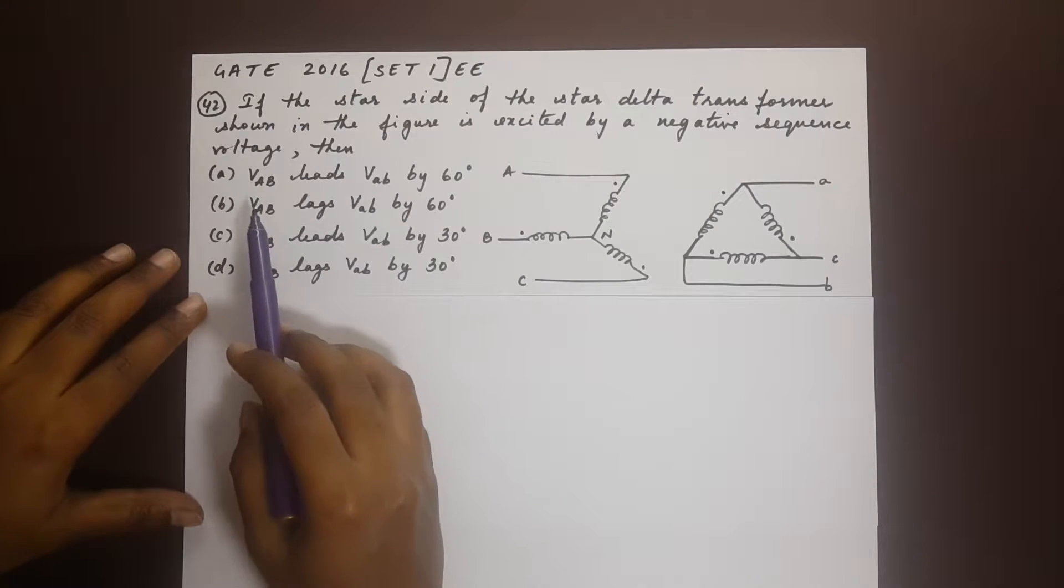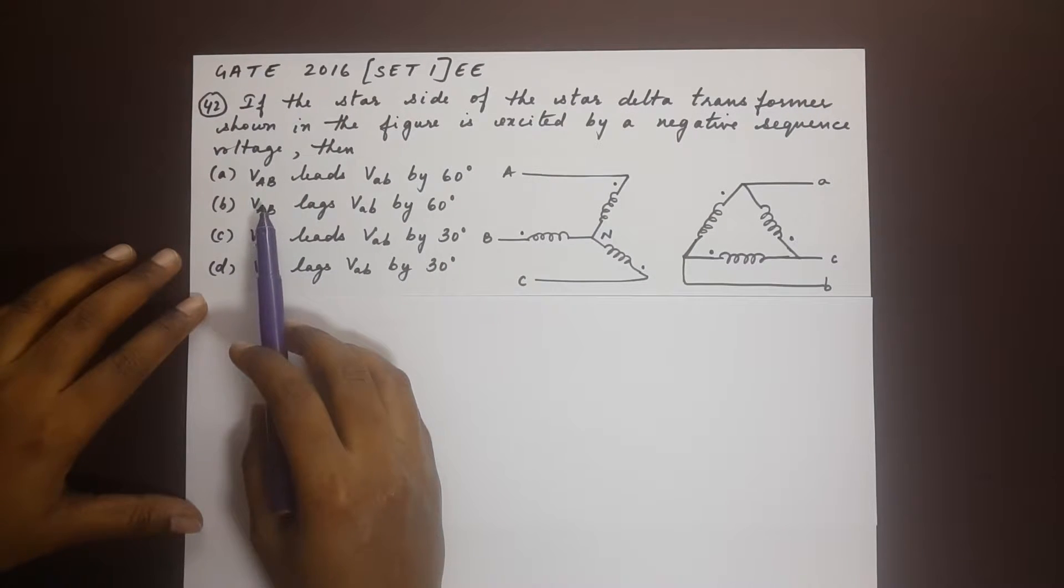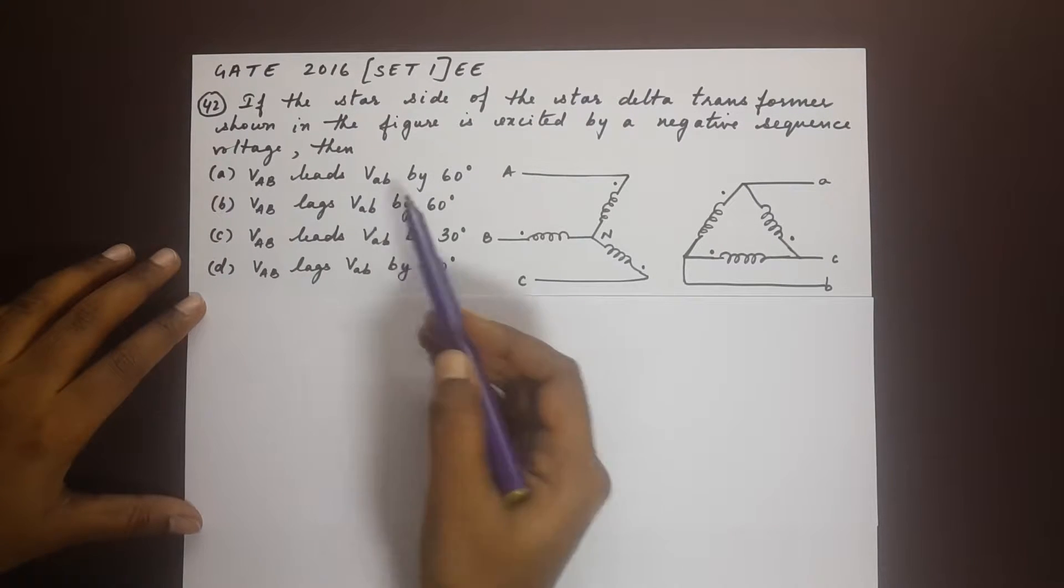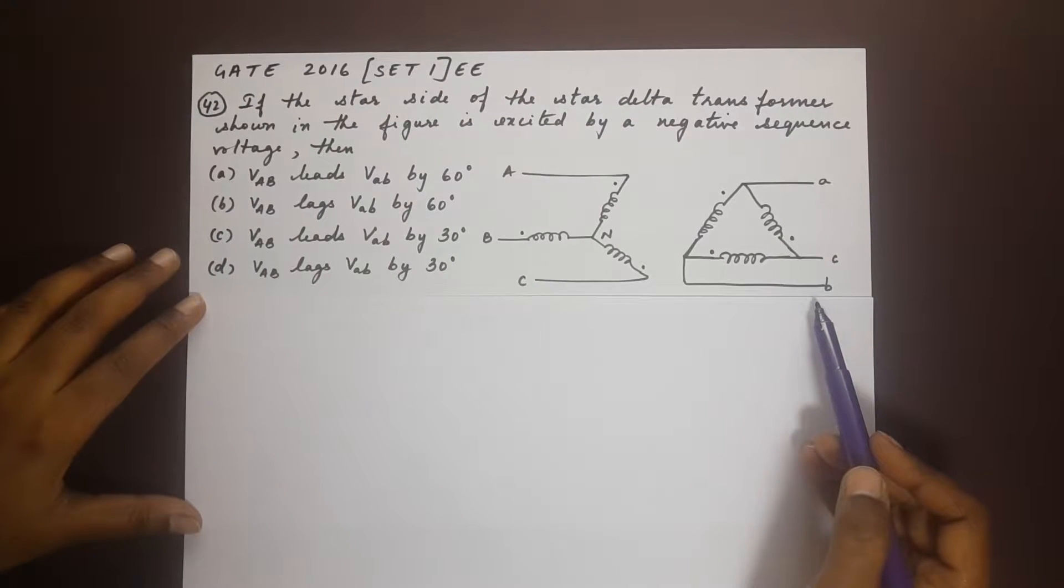Please be careful with the letters. The capital letters represent the star side whereas the small letters represent the delta side. So in order to choose or to get the right answer, phasor diagrams will help us.